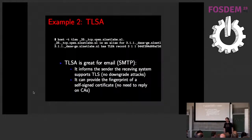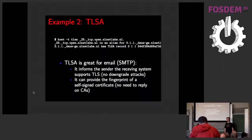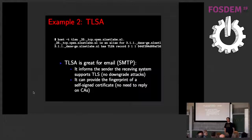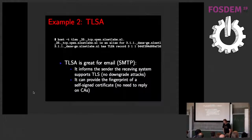My second example is TLSA. I really like TLSA for mail servers. There's no real way to enforce a secure connection between mail servers — you can ask if a mail server supports STARTTLS, but a man-in-the-middle can do a downgrade attack. If you put a TLSA record in DNS, it's a very clear statement from the operator of the receiving mail server: 'I want TLS to be used and this is my certificate.' With encrypted email, everybody started with self-signed certificates, so you can't simply say all certificates need to be CA-signed. With TLSA, you make an explicit statement: 'this is my certificate or this is my CA.'